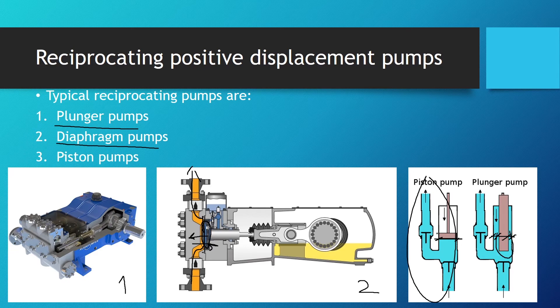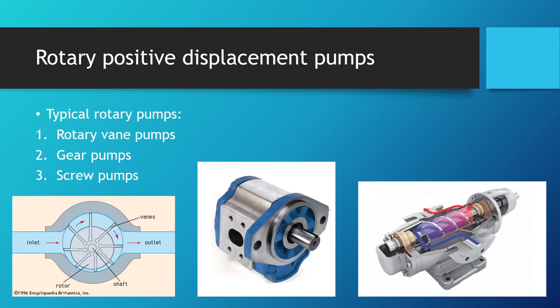Rotary positive displacement pumps include rotary vane pumps, gear pumps, and screw pumps. In the next lessons we're going to talk about each of these pump types individually.